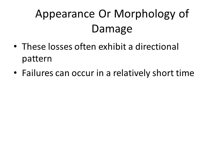Appearance or morphology of damage: erosion damage normally exhibits a directional pattern. Since this is a mechanical damage, failures can occur in a relatively short time. Erosion-corrosion is characterized by localized loss of thickness in the form of pits, grooves, gullies, waves, rounded holes, and valleys — similar to what we observe in soil erosion. These holes often exhibit a directional pattern, and because these are mechanical failures, they can occur in a very short time.